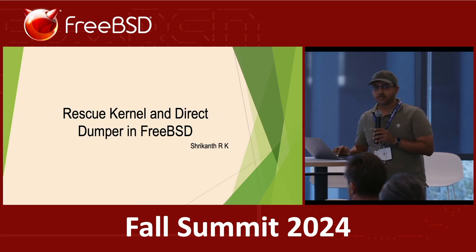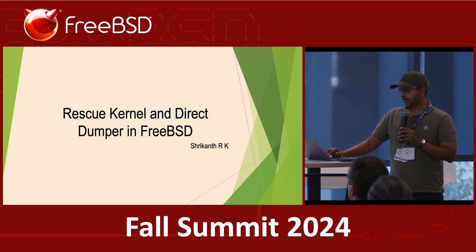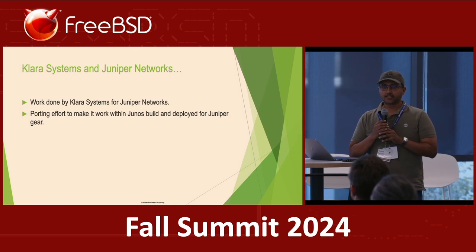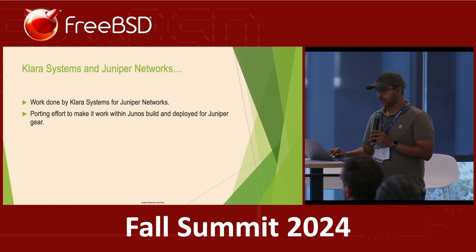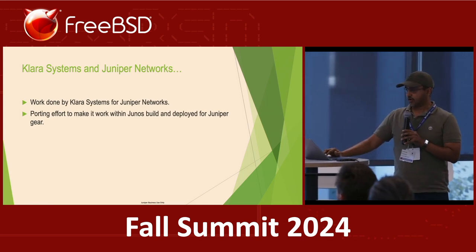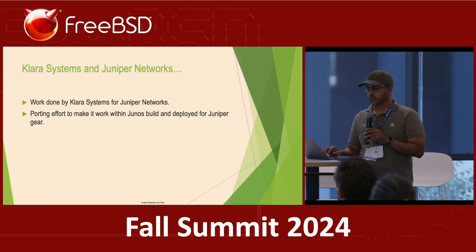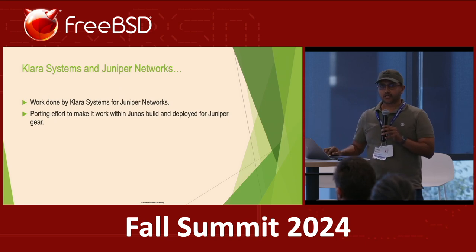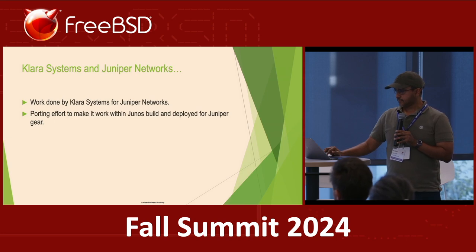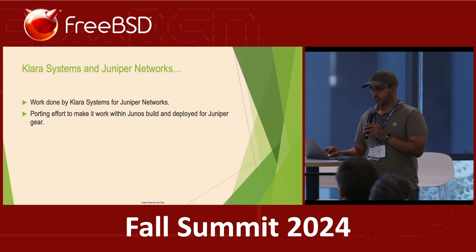I'll be giving a very brief overview of the rescue kernel and direct dumper in FreeBSD. It's not overly technical, but the objective was to engage the community on this topic. This work was primarily done by Clara Systems for Juniper Networks — the heavy lifting was done by Clara — and then there was some porting effort to make it work within the Junos build environment and deploy it for Juniper boxes. I'll give an overview of the what and why this solution was required for us.